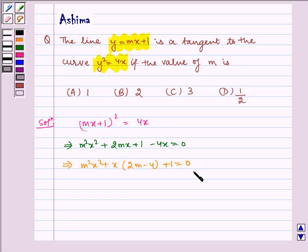The line is tangent if it cuts the curve in two coincident points. Therefore, the discriminant should be equal to 0. That is, b² - 4ac = 0.